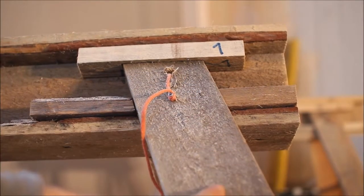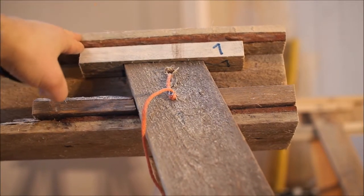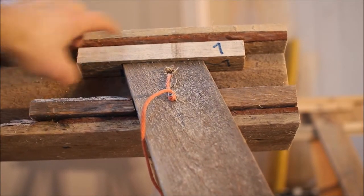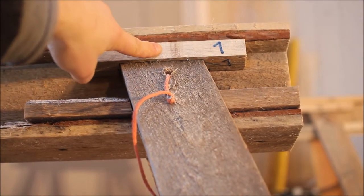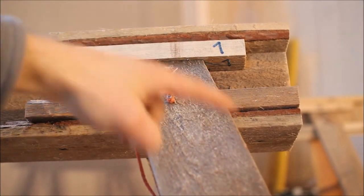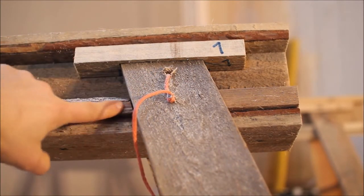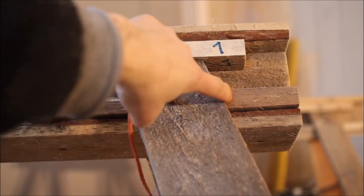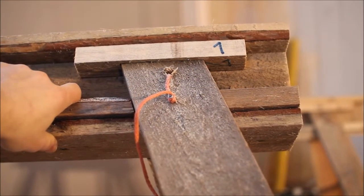The legs of the sawhorse are attached to the saddle with these three blocks of wood. This upper block has a slot in it and the leg slides into that slot. And the lower blocks of wood prevent the sideways movement of the leg.